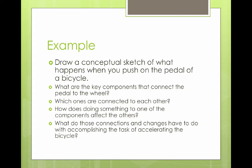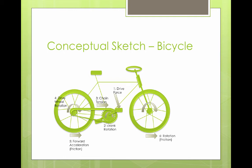And what do those connections and changes have to do with accomplishing the task of accelerating the bicycle forward? Pause the video now and do your own sketch of a bicycle. Hopefully what you drew looks something like this. If not, go ahead and modify your drawing. As you can see by the numbered annotations and arrows, pushing on a pedal results in the turning of the crank, tensioning of the chain, which drives the rotation of the rear wheel, causing a forward acceleration of the bike due to the friction between the tires and the road.